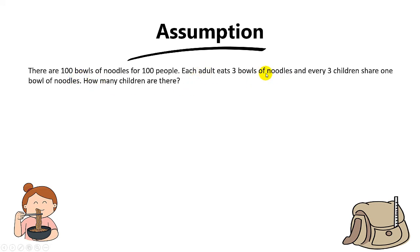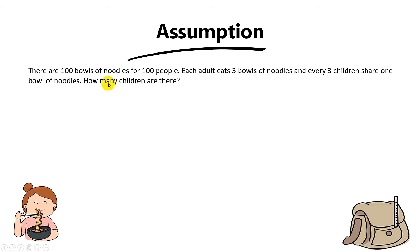It's a bit unfair — an adult can eat three bowls but every three children only share one bowl. In my class, some boys say they can eat three bowls in one day, yet in this question every three children can only share one bowl. Nonetheless, the question asks: how many children are there?